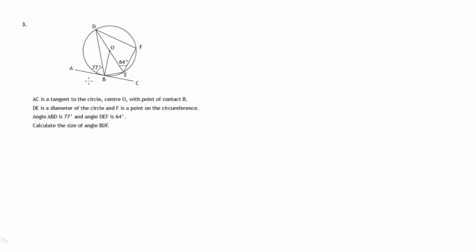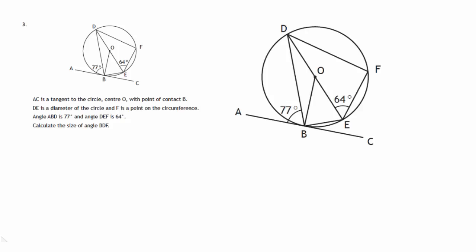It's made up of two smaller angles, so let's look at a larger diagram of this and see what we can see. We're told that AC is a tangent, so this line here is a tangent to the circle.